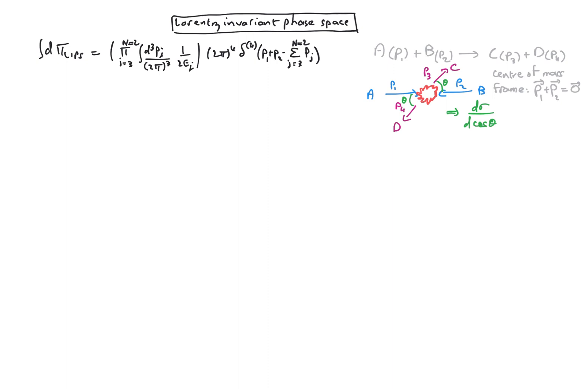Our first step is to split the energy and momentum conservation conditions, where we use the fact that we are in the center of mass frame. Note that the energies are in fact a function of the Euclidean momentum delta because the particles are on mass shell.